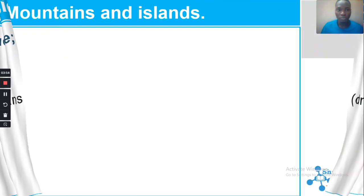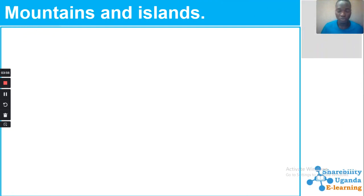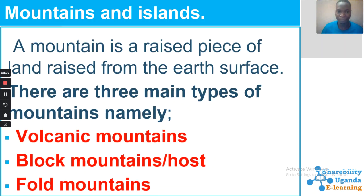We are going to look at mountains and islands as the first physical feature in today's lesson. Whenever you find something raised you might think that's a mountain, but it needs to be higher compared to ant hills. A mountain is a raised piece of land raised from the earth's surface.